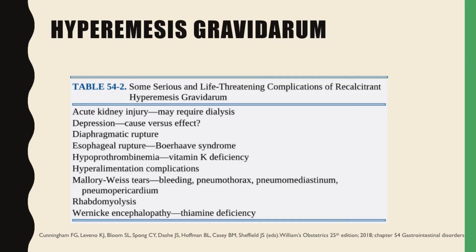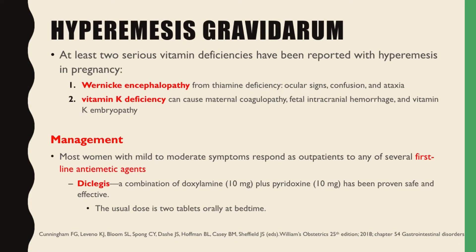Wernicke encephalopathy due to thiamine deficiency is also a complication. At least two serious vitamin deficiencies have been reported with hyperemesis gravidarum: Wernicke encephalopathy from thiamine deficiency, which may manifest as ocular signs, confusion, and ataxia, and vitamin K deficiency, which can cause maternal coagulopathy, fetal intracranial hemorrhage, and vitamin K embryopathy.